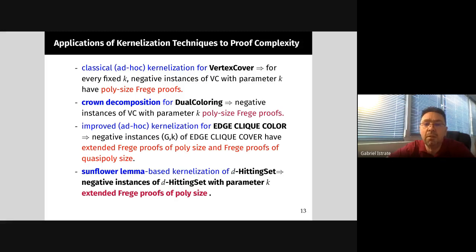Although in all these cases, we've actually improved these kernelizations somewhat to obtain our results - they're not exactly the same as usual. We need to change them to make the length of the reduction chain logarithmic or constant. We can prove for vertex cover we have polynomial size Frege proofs, for edge clique cover we have polynomial size extended Frege proofs and quasi-polynomial Frege proofs. There are other results which apply known techniques in kernelization, such as crown decomposition and sunflower lemma. Here we have to improve the kernelizations to make the length of the reduction chain logarithmic - because in kernelization that wasn't an issue, for us it is. We're able to get polynomial size Frege proofs for dual coloring and extended Frege proofs of polynomial size for hitting set.